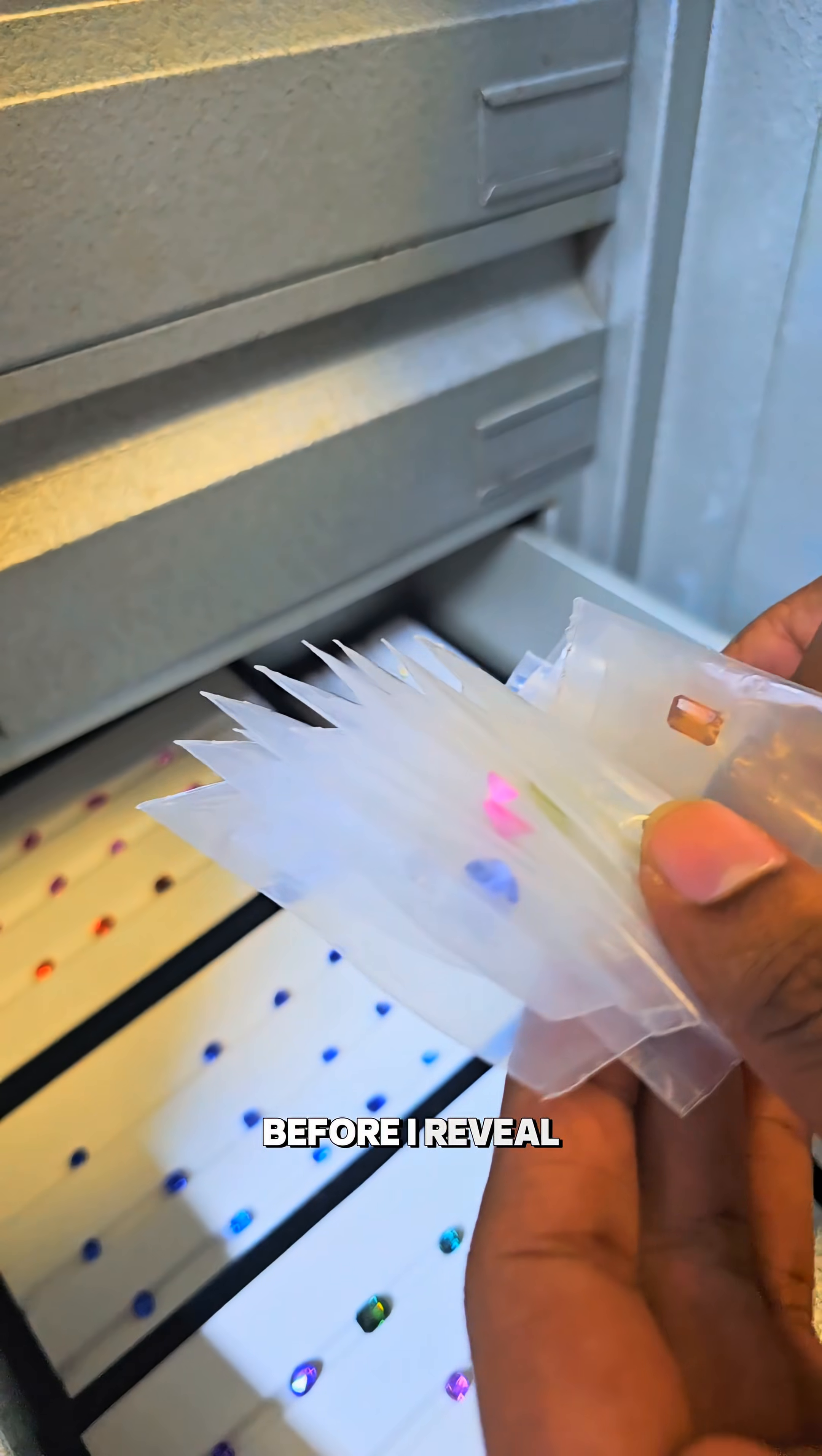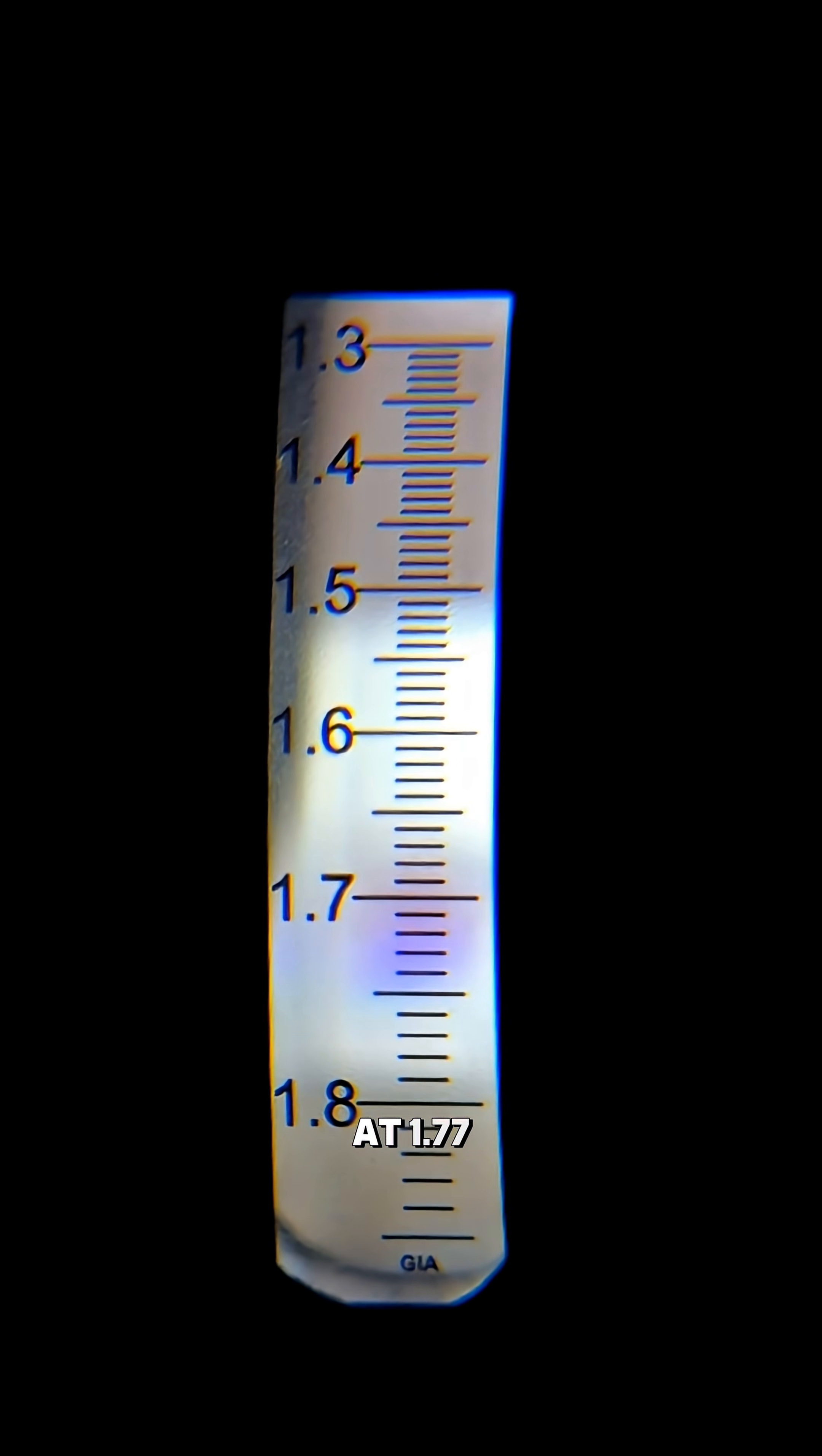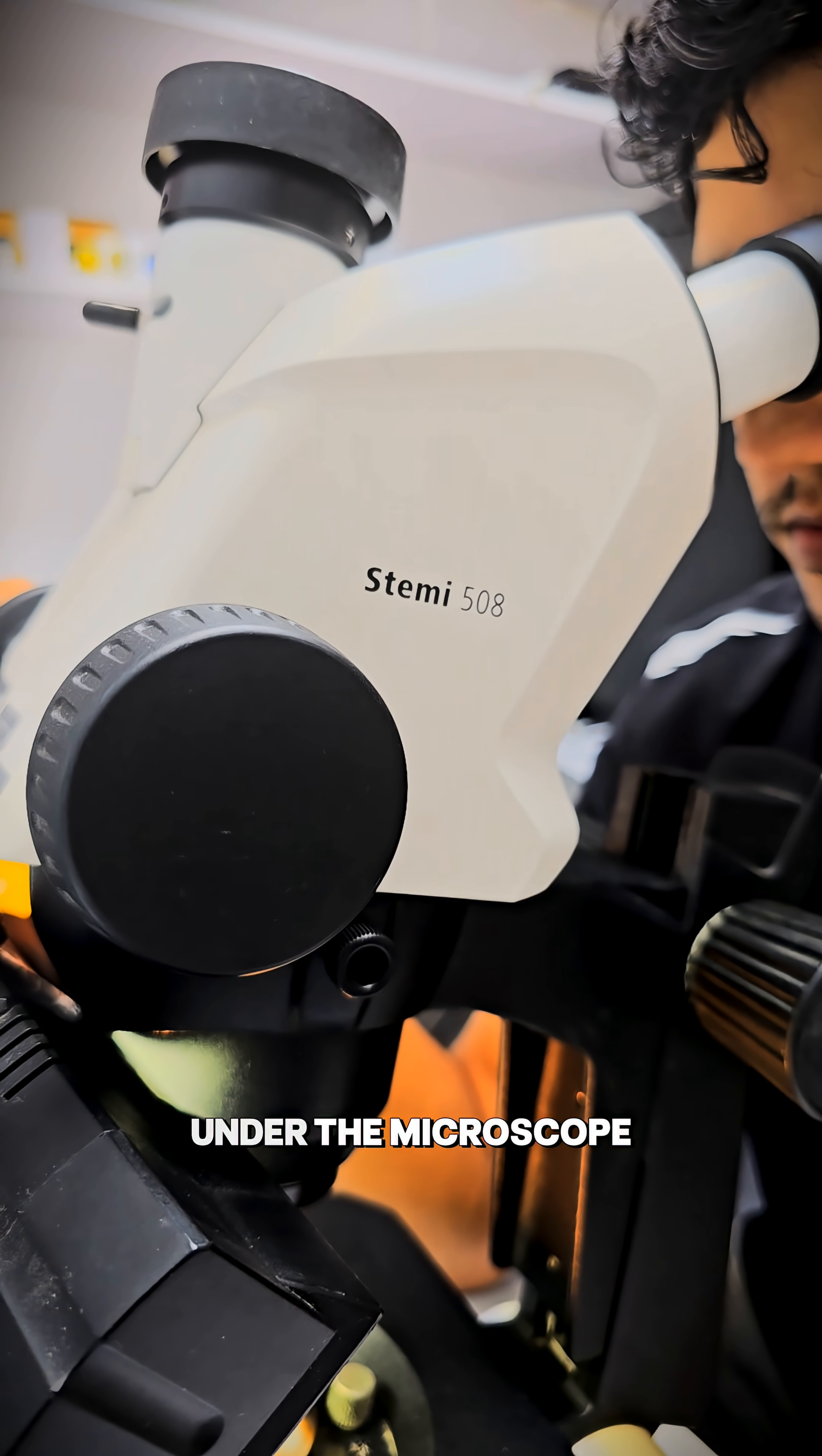Before I reveal if this sapphire is heated or not, make your call. First test: refractive index. Looking at the scale shadow edge at 1.77—that's corundum. Polarized scope to check the optical character: doubly refractive. Confirmed it's sapphire. Now under the microscope.